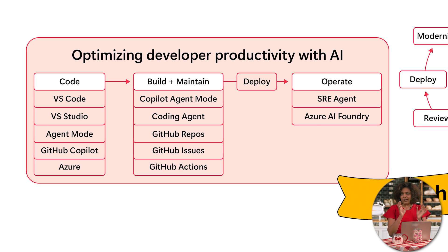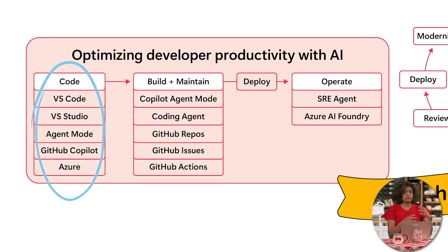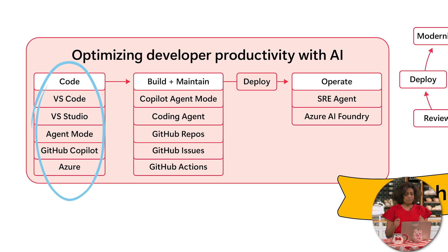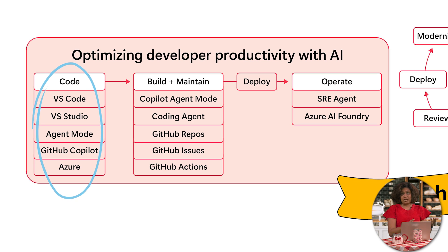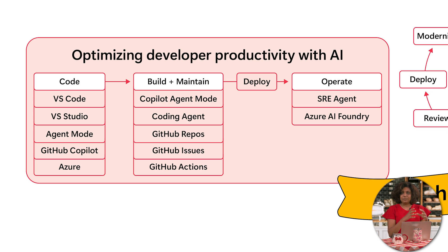The first category is code. That's where you've got VS Code with all the extensions, Visual Studio, and a GitHub Copilot extension you can use in agent mode. You can deploy through MCP into the Azure environment, and you can connect with Azure to understand how to build something. That's the code part — where you get all the AI assistance with these tools.